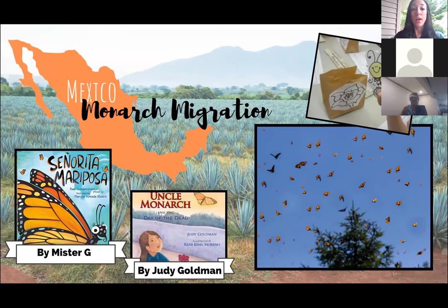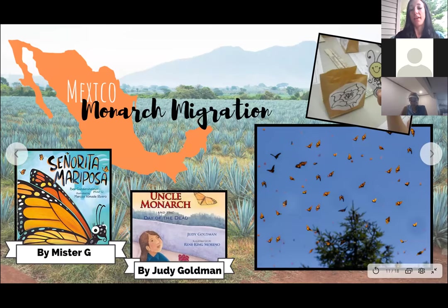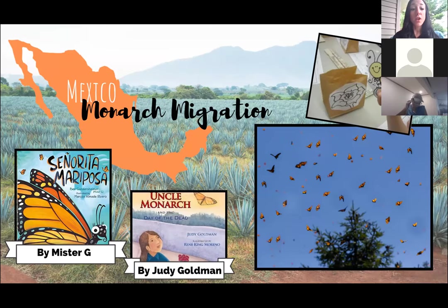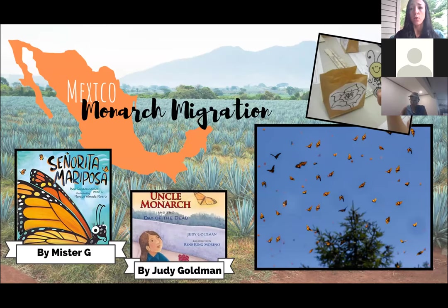I chose to focus on Mexico with the monarch migration because it's such a cool thing. If you've ever seen the monarch migration, it's amazing. This would be a great topic especially if you're teaching migratorial patterns in life science in junior high or high school. I included a couple of books: Señorita Mariposa — it's a poem by an author who goes by Mr. G, and it incorporates bilingual aspects throughout his poetry.